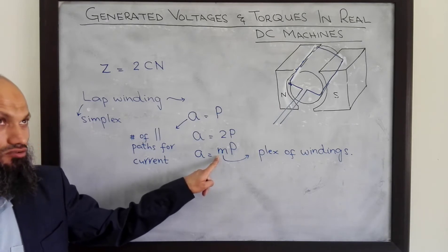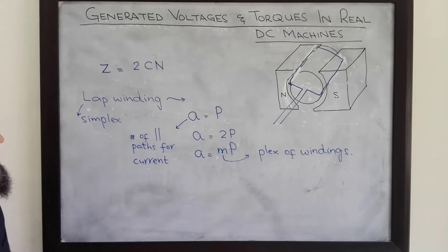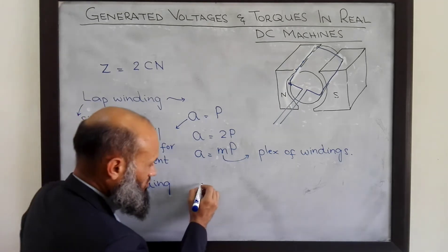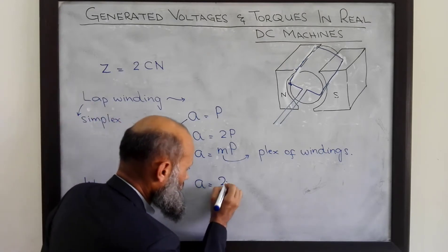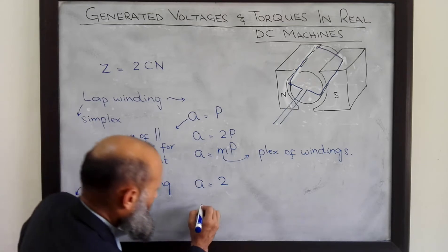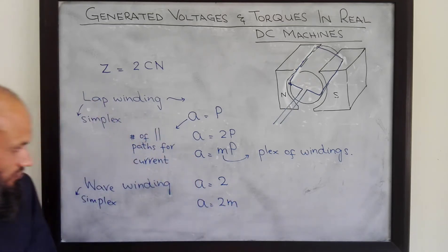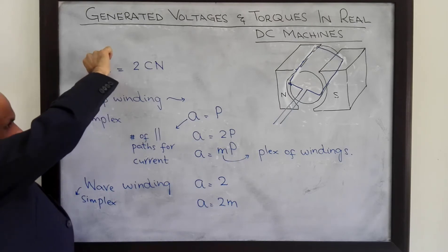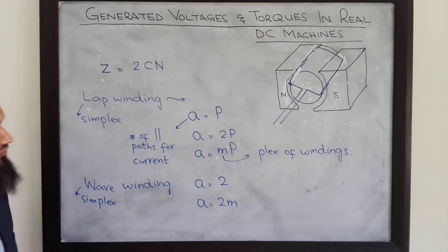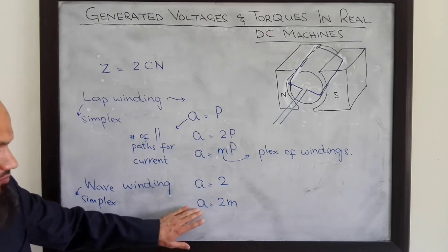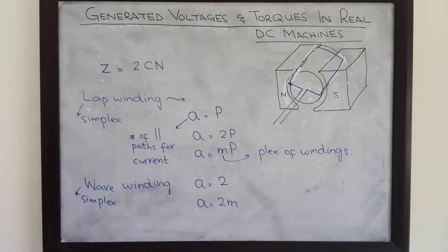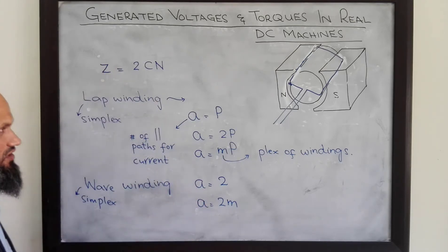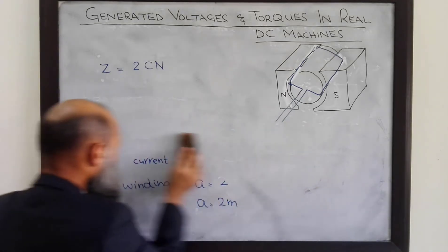For duplex winding M is 2, for triplex winding M is 3. In the case of simplex wave-wound DC machines, the number of parallel paths for current is always equal to 2. For duplex and M-plex wave winding, the number of parallel paths is 2 multiplied by M. So there are Z conductors in the real DC machine in which voltage is being induced, and there are A parallel paths. The total number of conductors in each parallel path is Z divided by A.